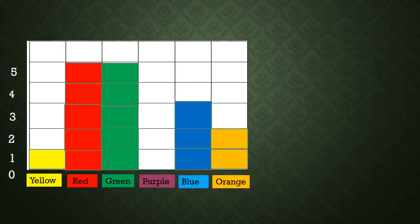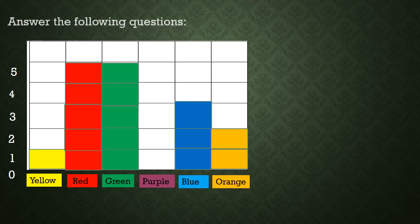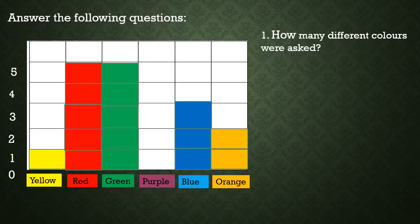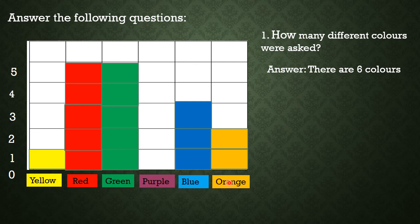Now let's answer the following questions based on the block graph. Number 1: How many different colors were asked? You are right — there are 6 colors. What are the 6 colors? The 6 colors are yellow, red, green, purple, blue, and orange.